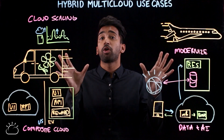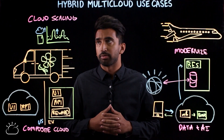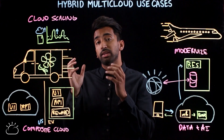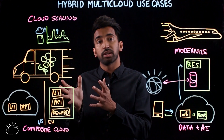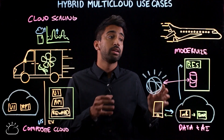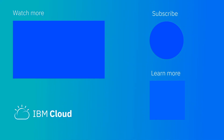Today we talked about four major use cases for hybrid and multi-cloud platforms: cloud scaling and composite cloud in the flower delivery service, as well as modernization and data and AI for the airline industry. If you like this video or have any questions, be sure to drop a like or a comment below, and subscribe to stay tuned for more videos like this in the future.